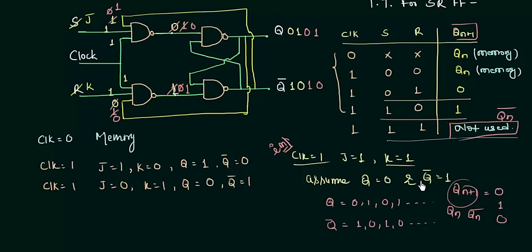There is a difference between toggling and racing which will be explained separately in another presentation. This is a very important presentation and you have to remember this truth table. There is a slight difference from the SR truth table: the last state gives us Q(n) complement. We will use this for the excitation table and characteristic table in the next presentation.